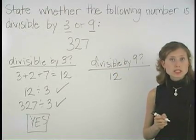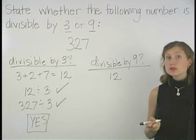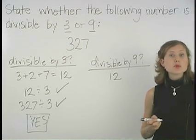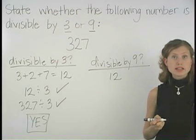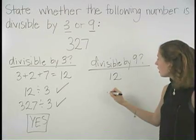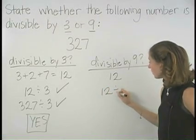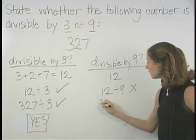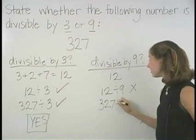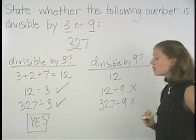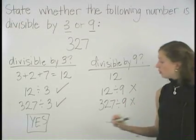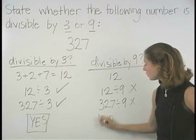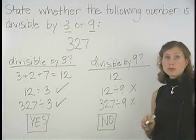The divisibility rule tells us that if the sum of the digits is divisible by 9, then the number must also be divisible by 9. So notice that 12 is not divisible by 9. This means that 327 is not divisible by 9. So our answer is no, 327 is not divisible by 9.